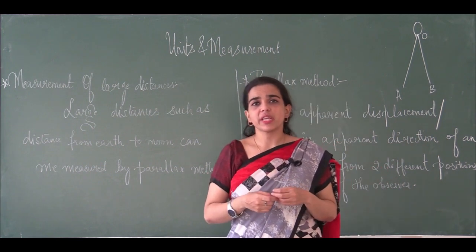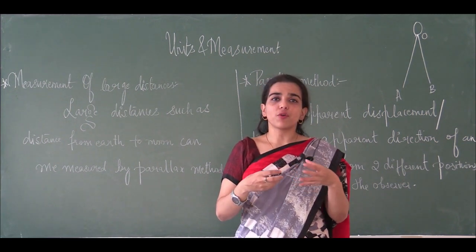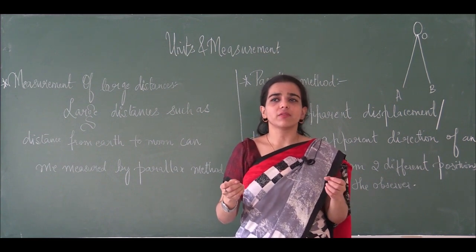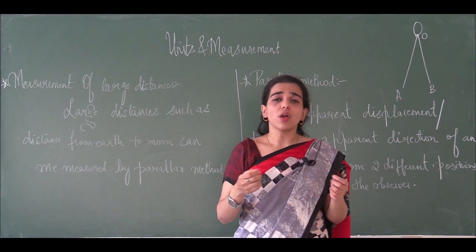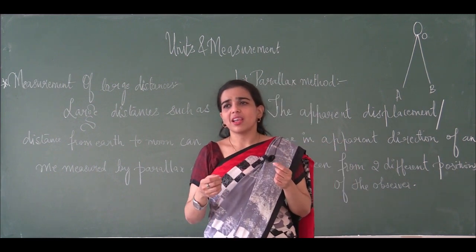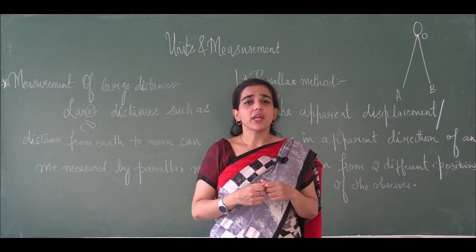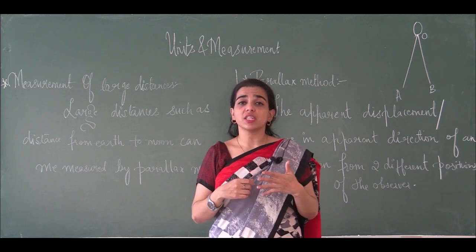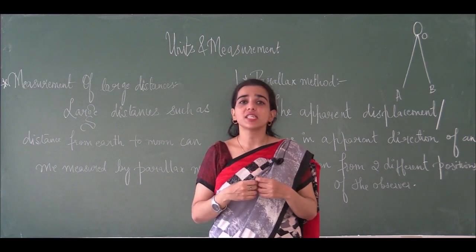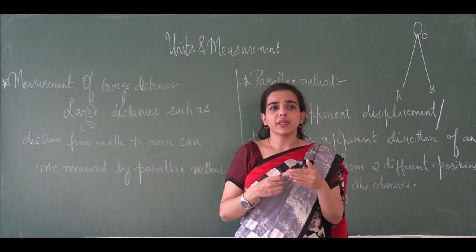Measuring means — as I gave you all an example yesterday — to measure something we use a measuring tape if the quantity is small, or we measure with the help of a scale. For example, if you have to measure the length of a wire or a rope, you use a measuring tape. But what if you have to measure the distance from earth to moon? It is not possible to measure that distance with a measuring tape.